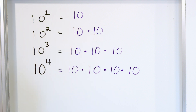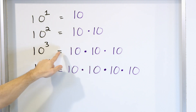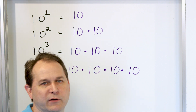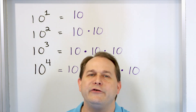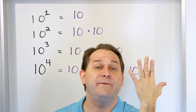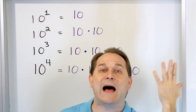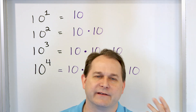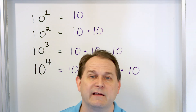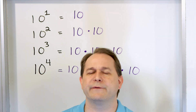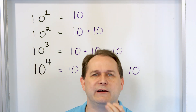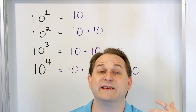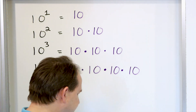When you have anything raised to the second power, it's two of them multiplied together. Cubed, which means power of 3, is three of them multiplied together. Raised to the power of 4 is four of them multiplied together. To the fifth power will be five of those things all multiplied together — and so on. Even to the 250th power would just mean 250 of those things multiplied together.